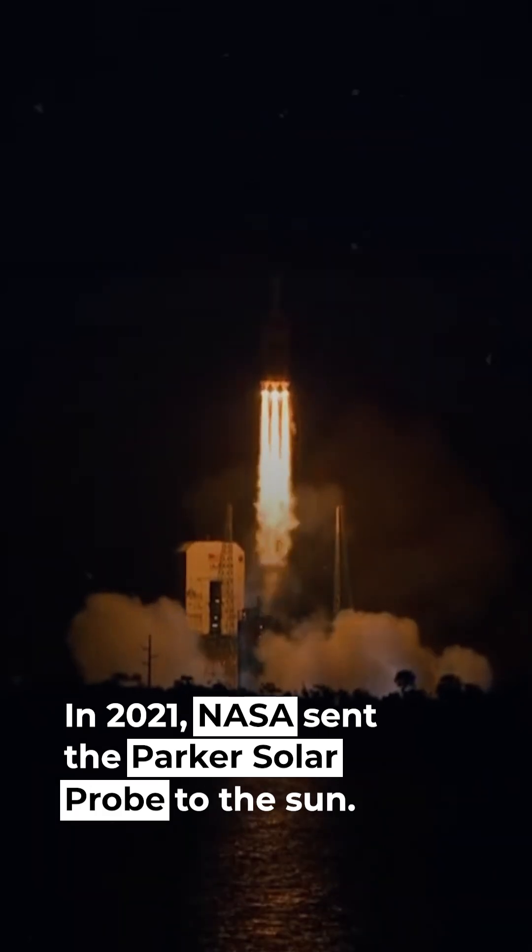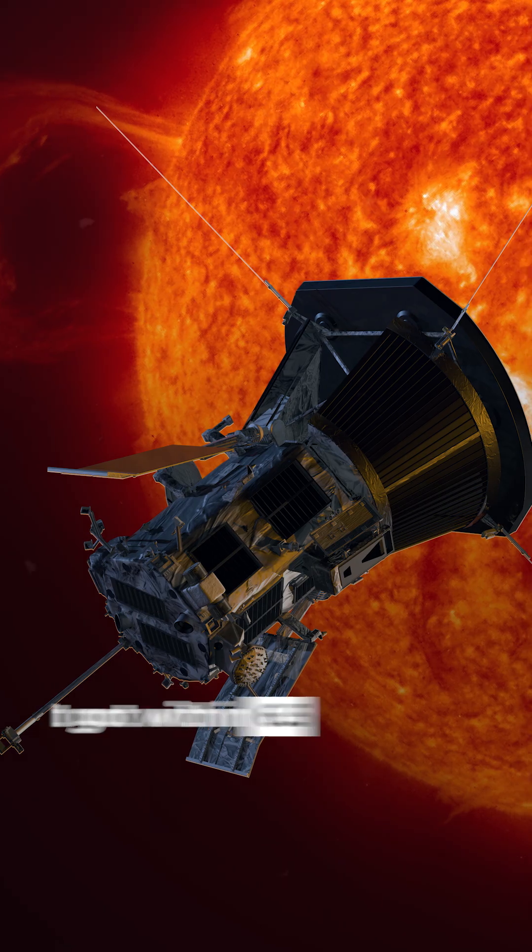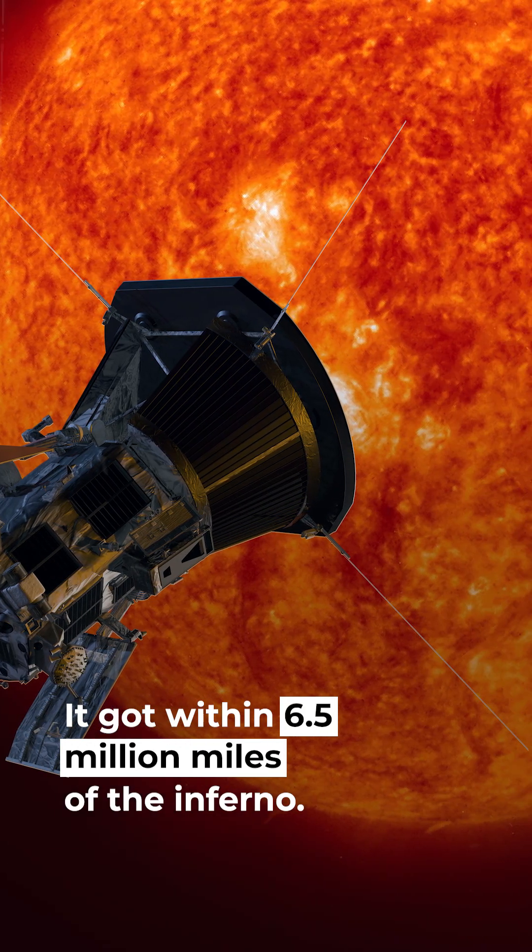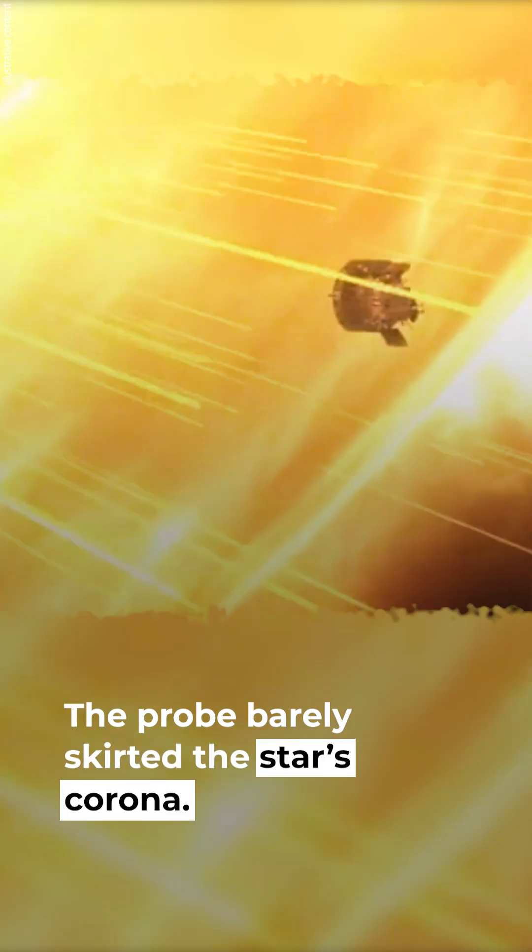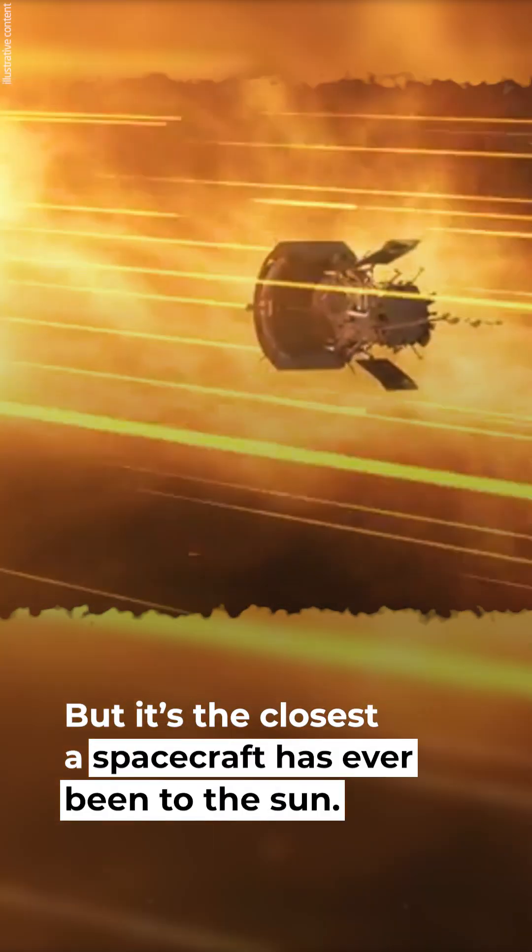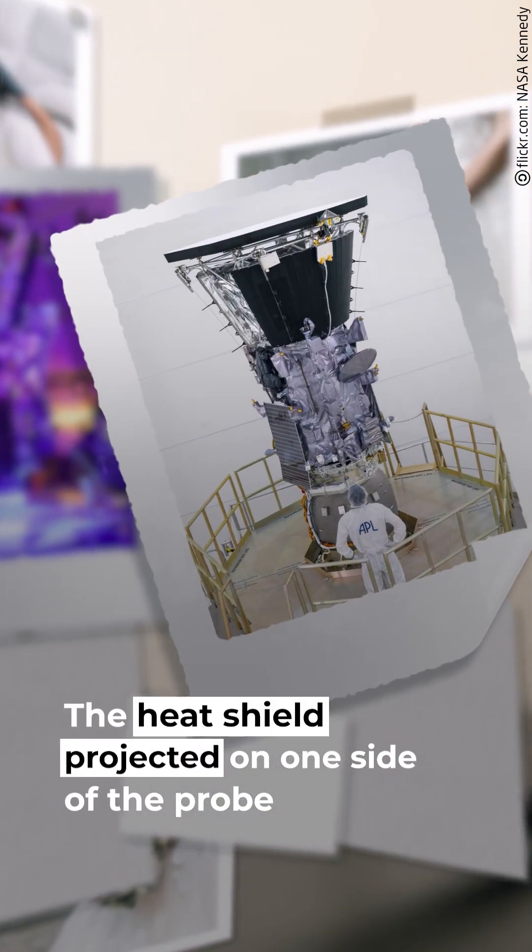In 2021, NASA sent the Parker Solar Probe to the sun. It got within 6.5 million miles of the inferno. The probe barely skirted the star's corona, but it's the closest a spacecraft has ever been to the sun. The heat shield projected on one side of the probe made this possible.